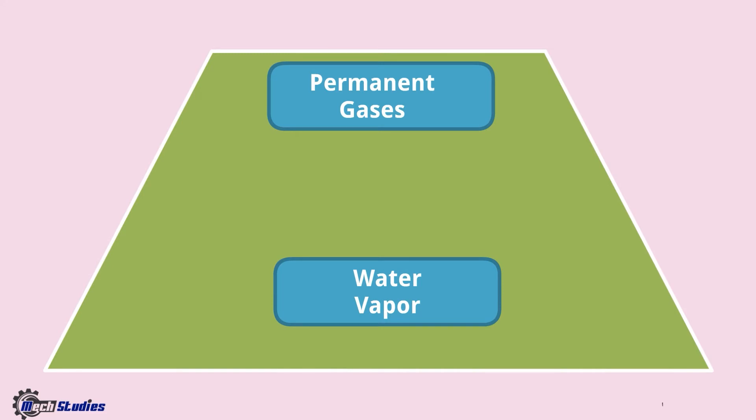Since atmospheric air consists of water vapor, this air is called moist air. So moist air means atmospheric air will have permanent gases and water vapor.